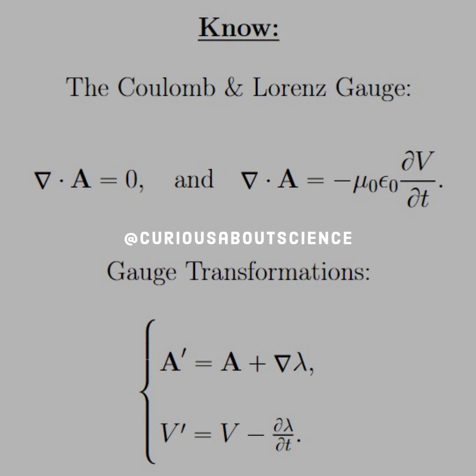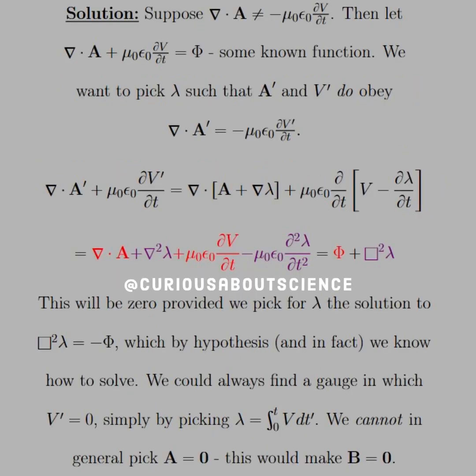Okay, well what we need to note is both the Coulomb and Lorenz gauge we saw them both last time: divergence equals zero, and divergence is negative mu naught epsilon naught dV/dt. We have the gauge transformations where we can add the scalar and subtract the scalar lambda accordingly.